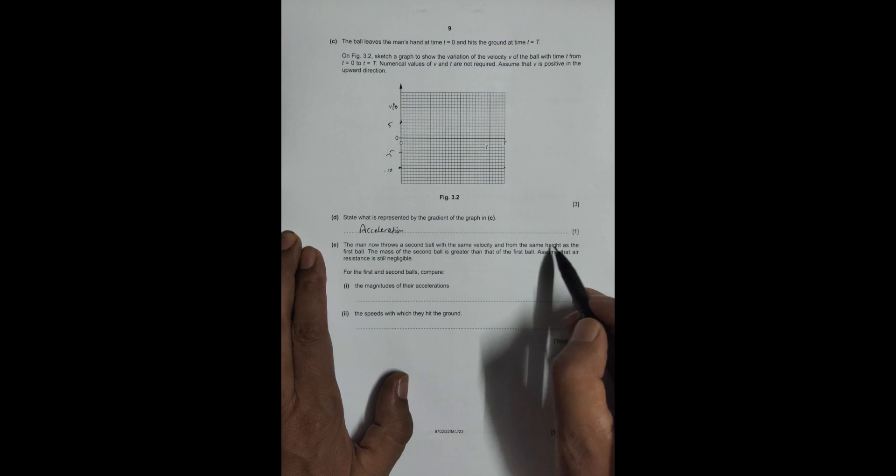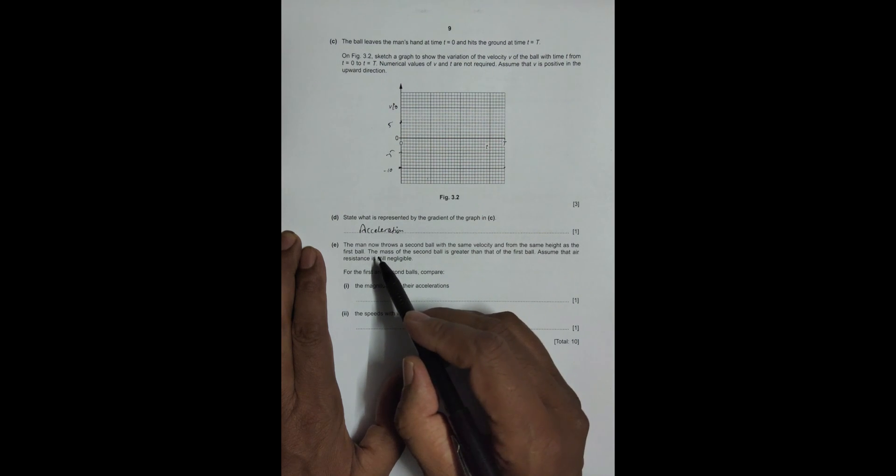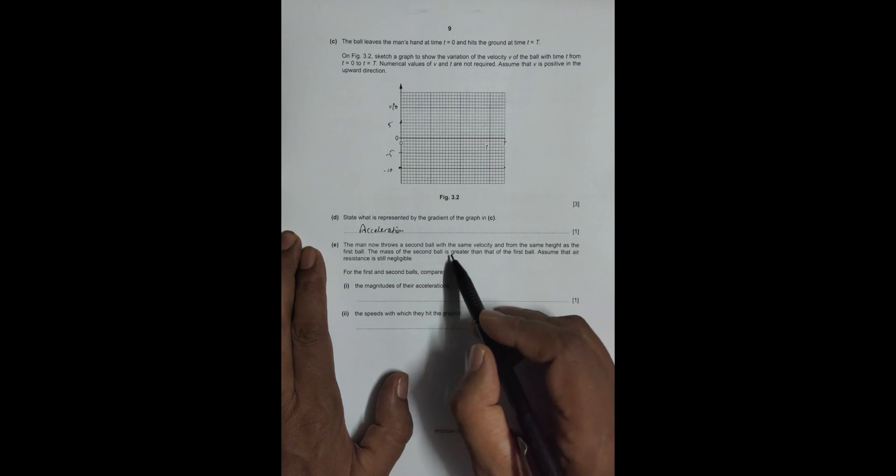The man now throws a second ball with the same velocity and from the same height as the first ball. The mass of the second ball is greater than that of the first ball. Assume that air resistance is not noticeable for the first and second balls. Compare the magnitude of the accelerations.